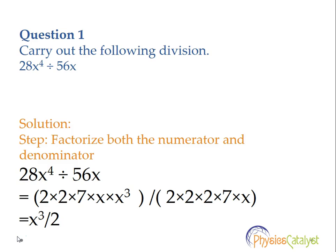So 28x to the power 4 divided by 56x can be written as 2 into 2 into 7 into x into x cube, where 28 is factorized into 2 into 2 into 7, divided by 2 into 2 into 2 into 7 into x. Here 56 is factorized as 2 into 2 into 2 into 7.